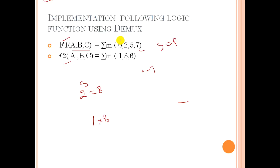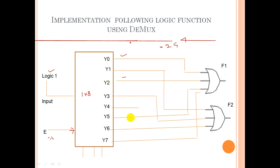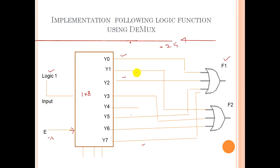For F1 = Σm(0, 2, 5, 7): connect outputs Y0, Y2, Y5, and Y7 to an OR gate to get F1. For F2 = Σm(1, 3, 6): connect outputs Y1, Y3, and Y6 to another OR gate to get F2. In this way, any Boolean expression can be implemented using a demux.